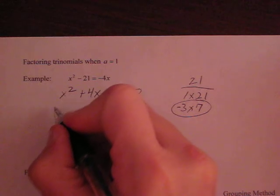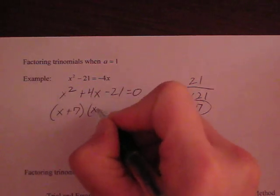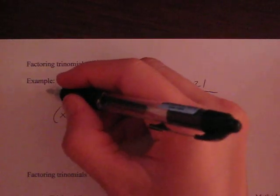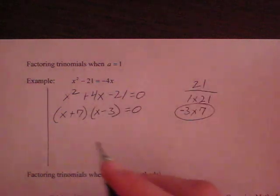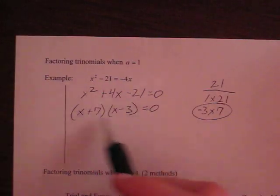So this list tells me that if I have x plus 7 times x minus 3, that's my factor. Now, whenever you do this, whenever you factor, you want to make sure that you check it to make sure that you have the right factors.